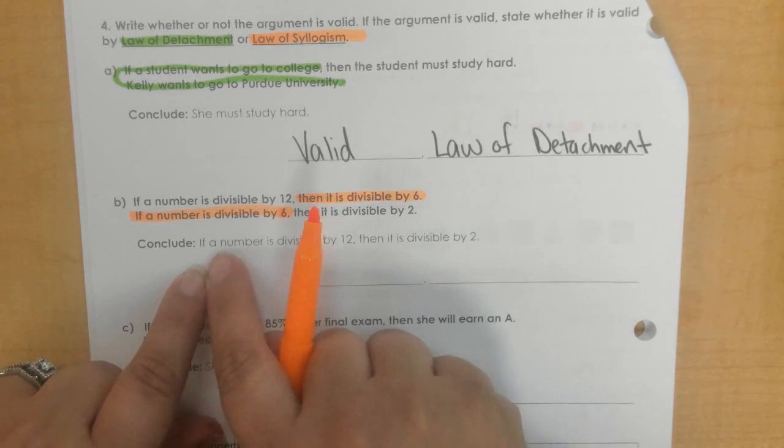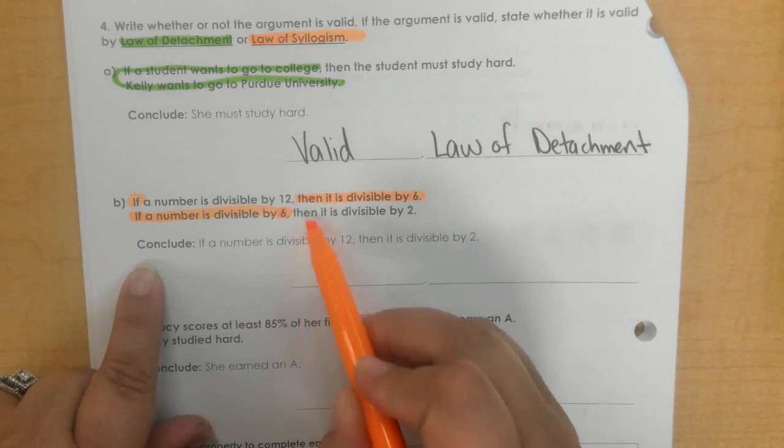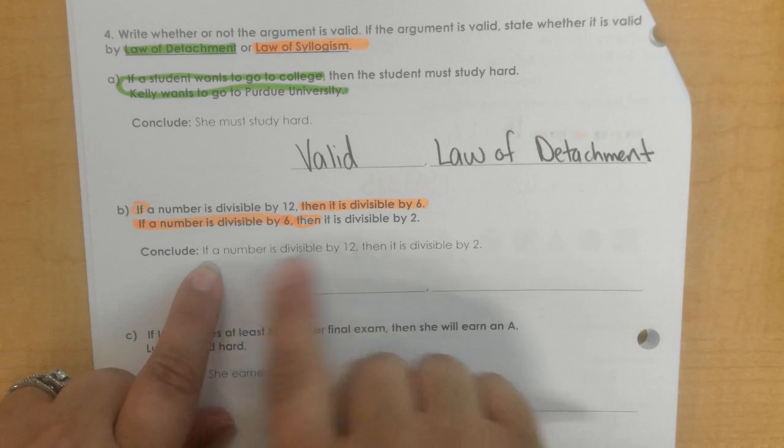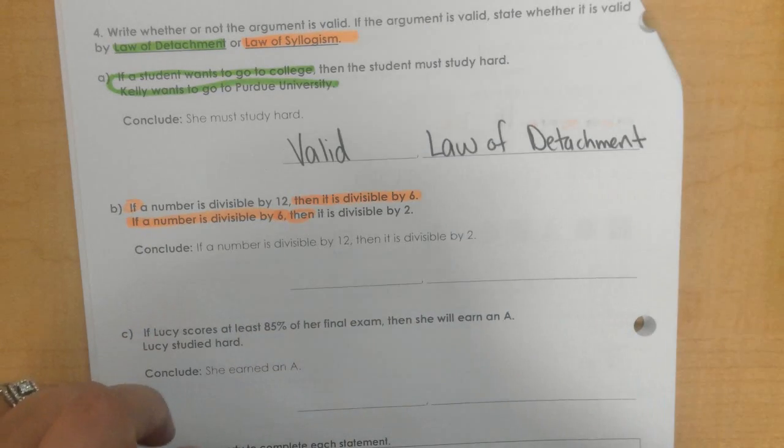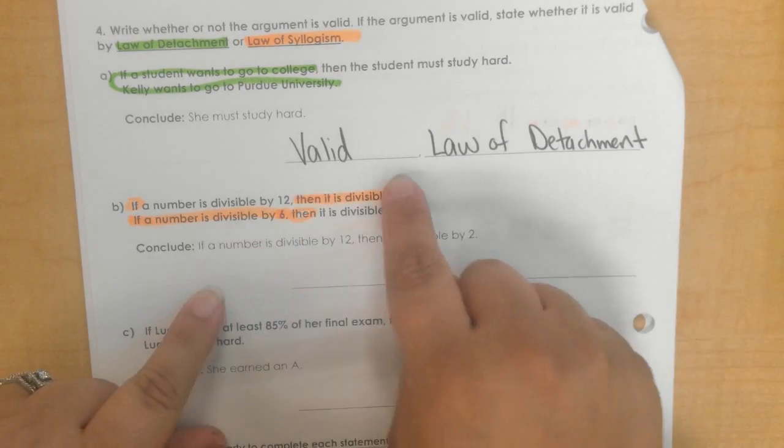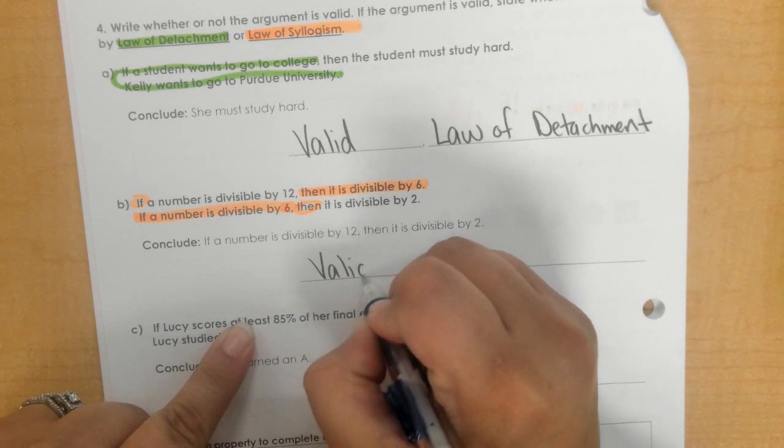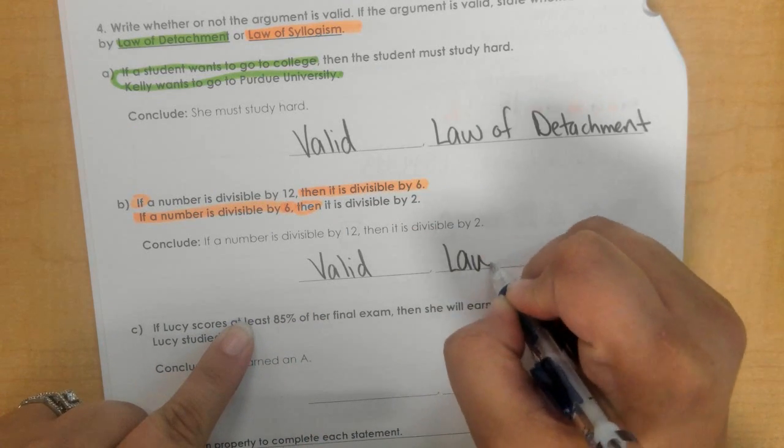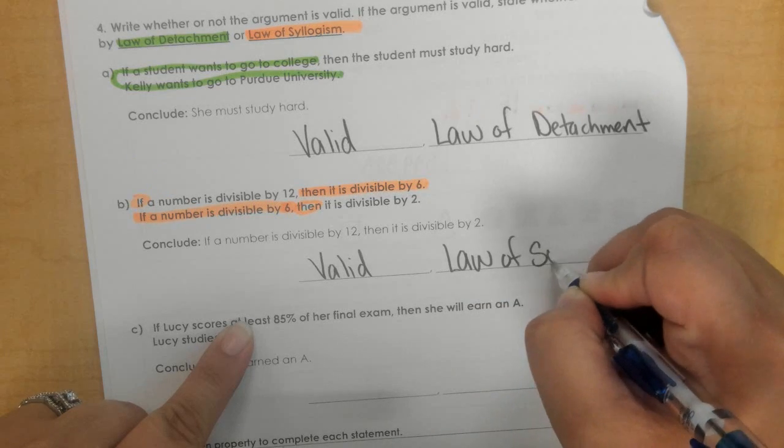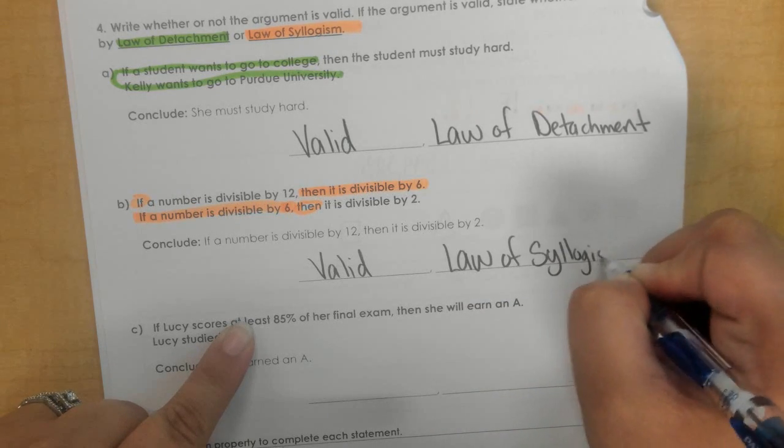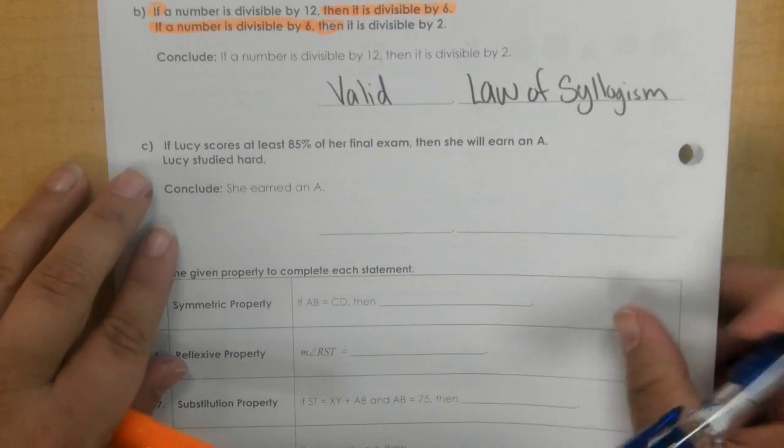So now you should be able to take this part and this part and bring it down here, which we do. Okay, so since these are exactly the same, it is valid and that is law of syllogism.